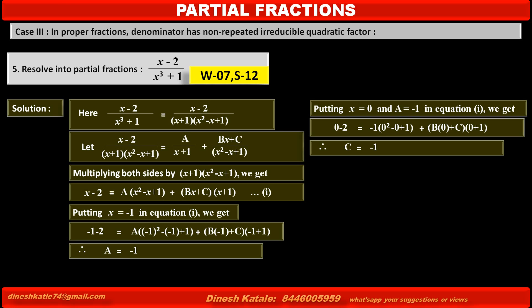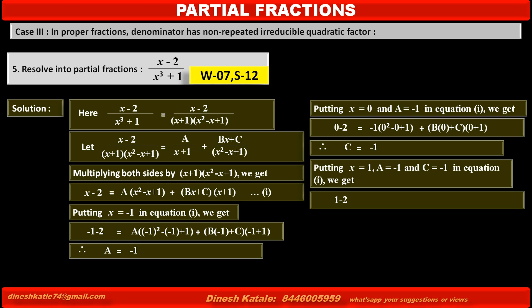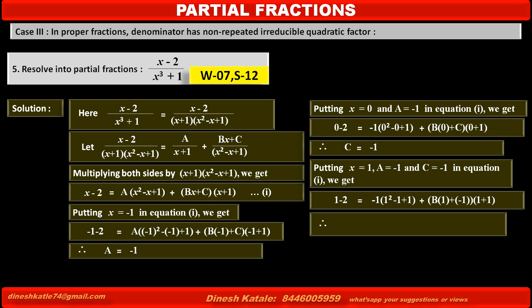To find the value of B, we substitute a comparable value of x. Putting x equal to 1, A equal to minus 1, and C equal to minus 1 in equation 1: the left-hand side becomes 1 minus 2, equal to the right-hand side: minus 1 into (1 squared minus 1 plus 1), plus B times 1, plus (minus 1) times (1 plus 1). Solving, we get B equal to 1.